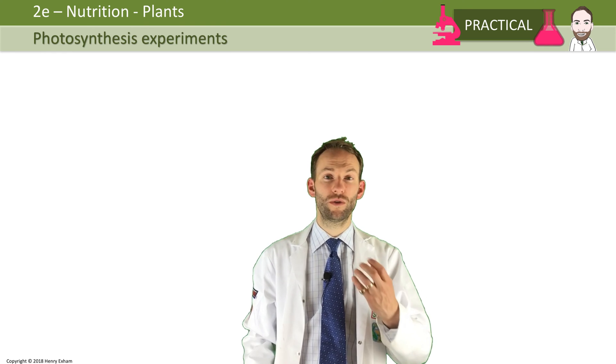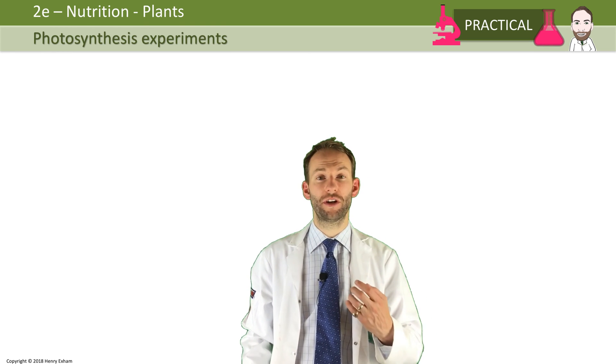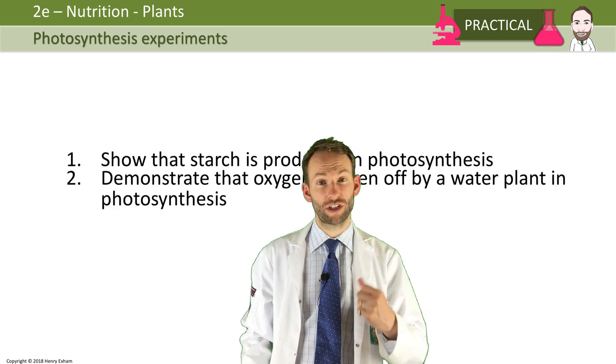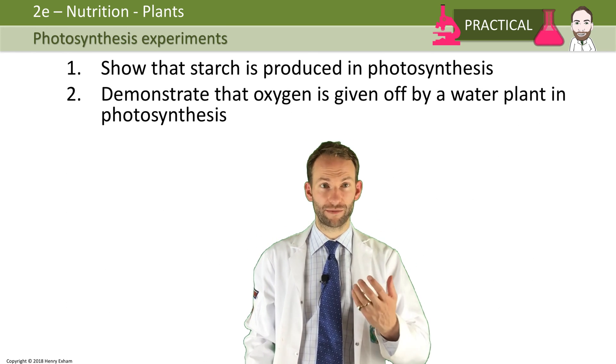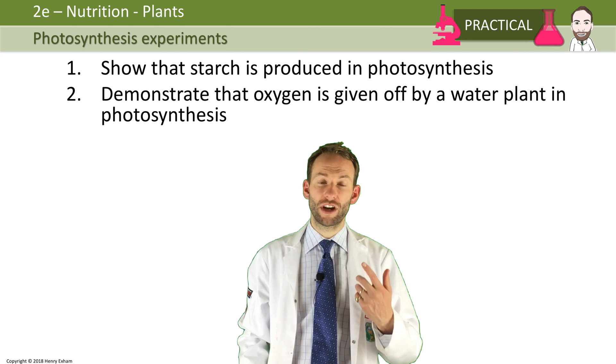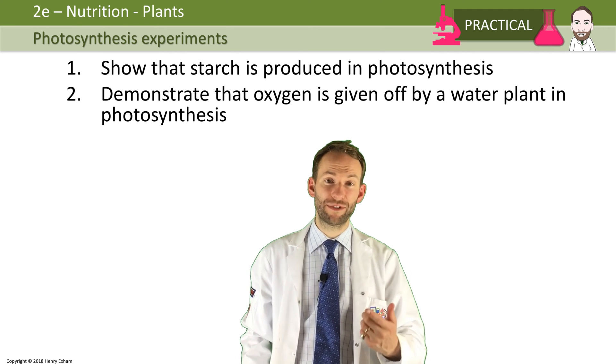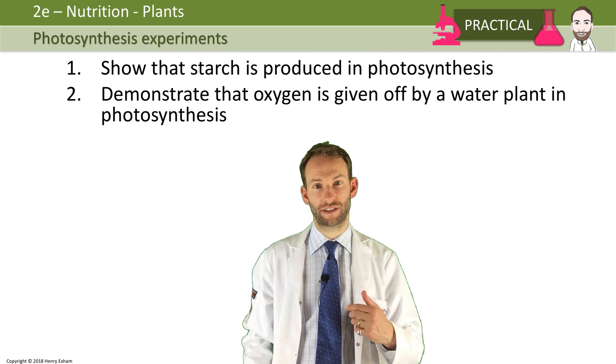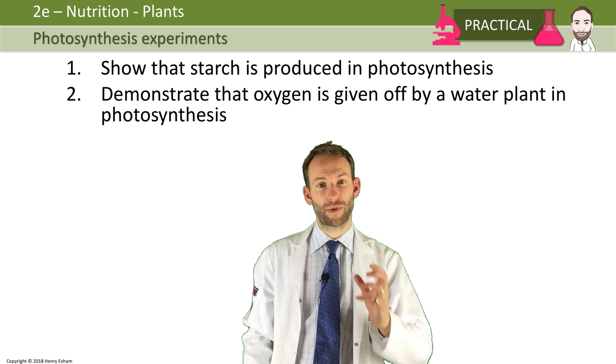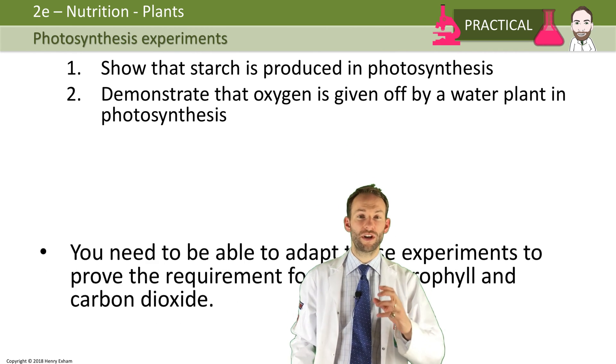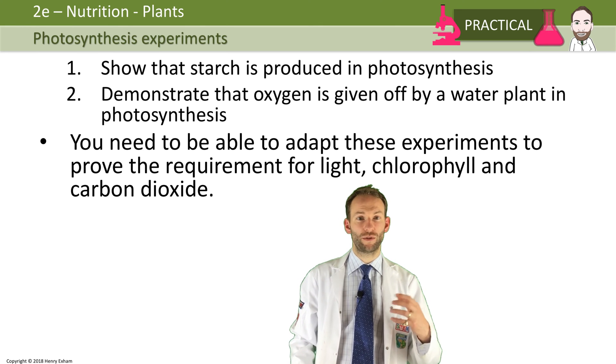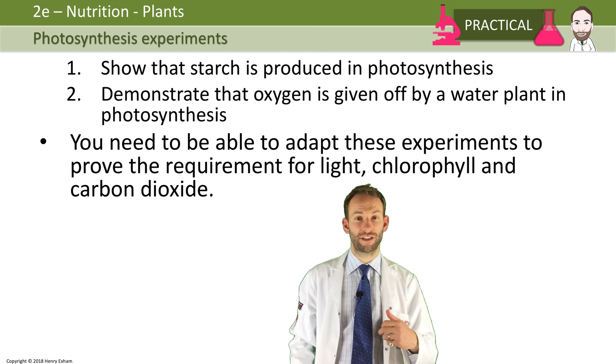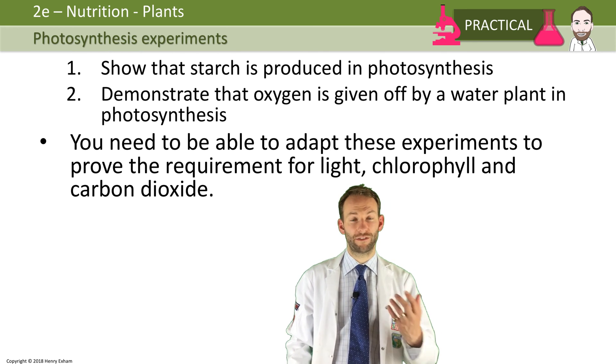Now there are some really key core practicals and experiments that you should know about in this topic. You ought to know about how you can show that starch is produced in photosynthesis, which comes from the glucose. You need to know how to demonstrate how oxygen is given off by a water plant in photosynthesis, and how to show how light and chlorophyll are required for photosynthesis, and carbon dioxide for that to work.